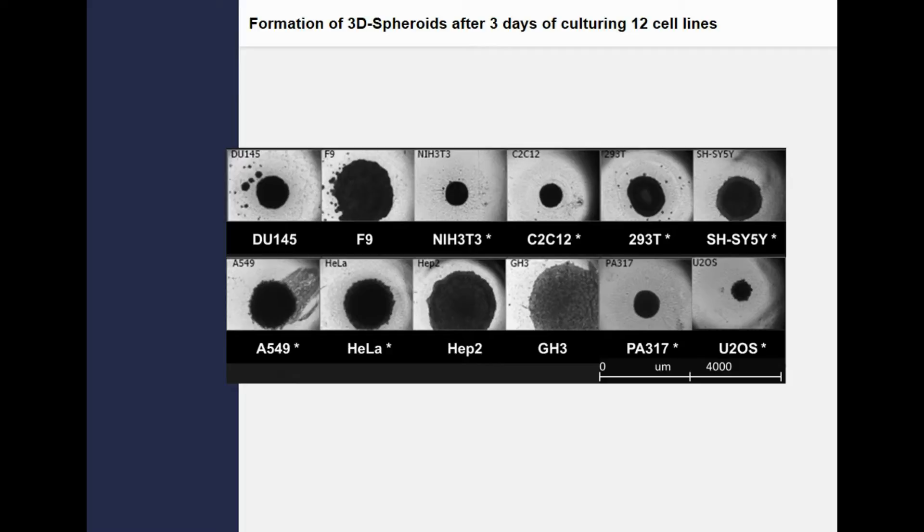As previously reported, we selected 12 cell lines as shown in this slide. Here, we investigate the toxicity of doxorubicin. Eight cell lines, as indicated with a star, were selected for the further study.